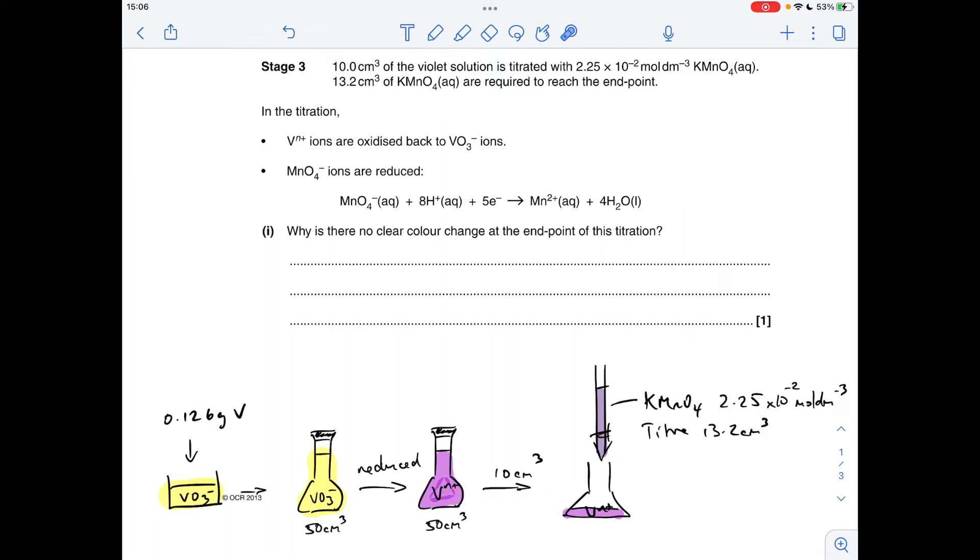10cm³ of that's gone into a conical flask for the titration and it's been titrated against potassium manganate 7 of that concentration and the titre was that. Now you'll notice that I've coloured in the burette roughly the colour of KMnO₄, which is like a purple colour. So that hopefully will help illustrate the answer of the first part.